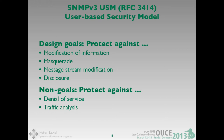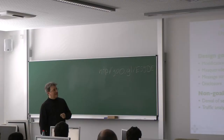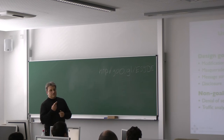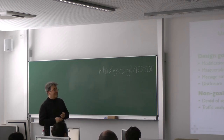SNMPv3 security model — the user-based security model. What did they want to achieve? They wanted to protect against modification of information — so that when I send a set request to a switch saying 'please turn off interface 20,' nobody can change that during transmission into something else. That's really important.